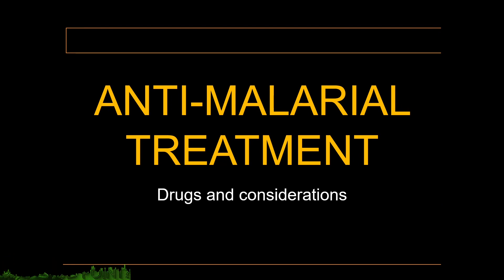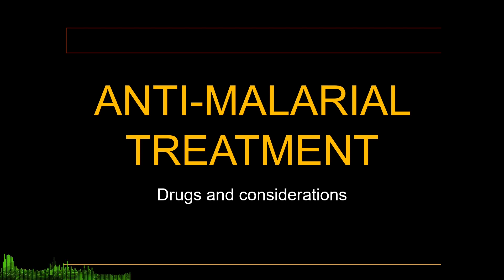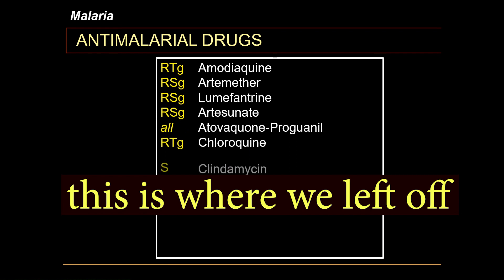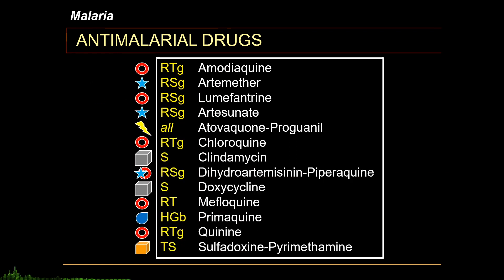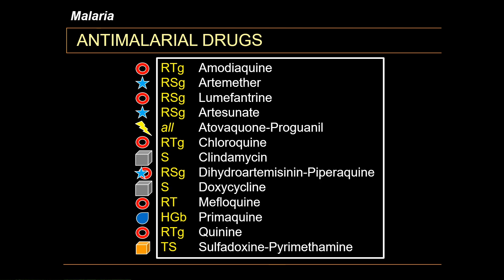Welcome back to the parasitology lecture series. The point of this lecture is to discuss antimalarial treatment. We have quite a list of antimalarial drugs: amodiaquine, artemether, lumefantrine, artesunate, atovaquone-proguanil (usually a combination drug), chloroquine, clindamycin (another combo drug), dihydroartemisinin-piperaquine, doxycycline, mefloquine, primaquine, quinine, and sulfadoxine-pyrimethamine. All of these are different antimalarial drugs, and some of them can be classified into categories.